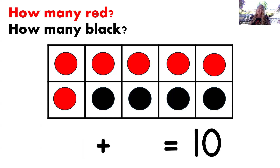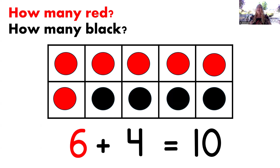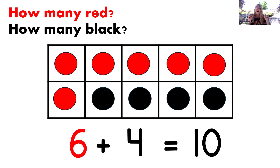How many dots are red now? Yes, six. And how many are black? You got it, four. Let's read that equation: six plus four equals 10. Wonderful job.